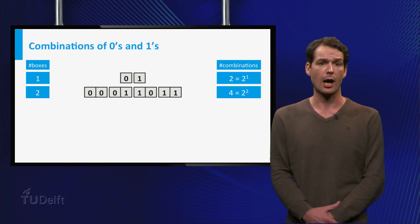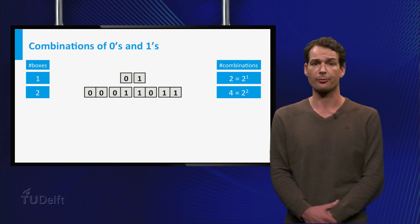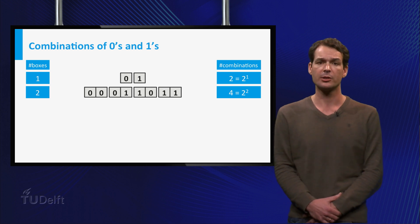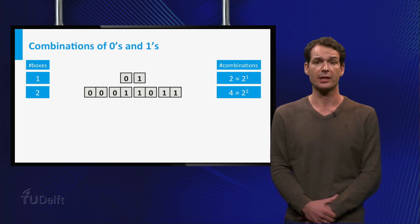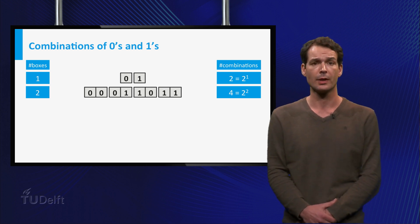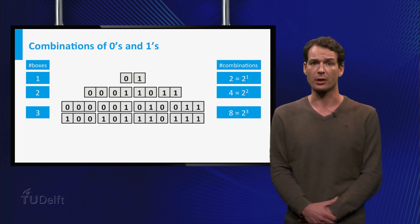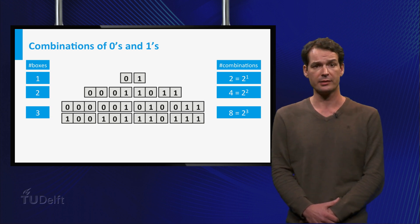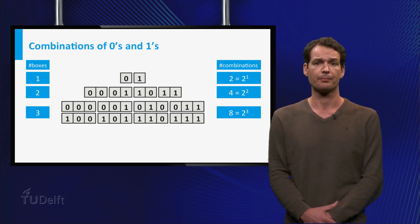You can ask how many combinations can be made with three boxes, or four, or more generally, x boxes. Each box can contain two values, so with three boxes you can make 2 to the power 3, which equals 8 combinations.